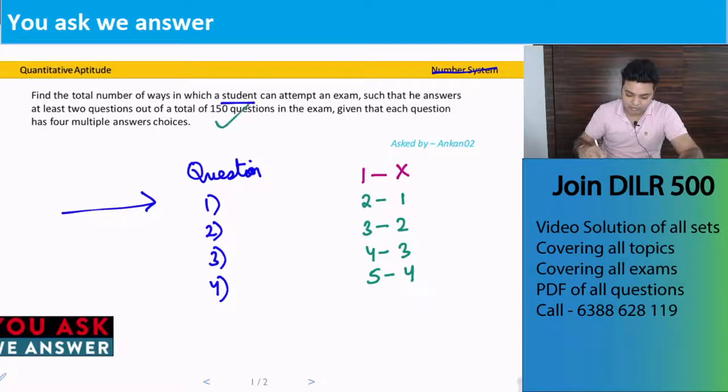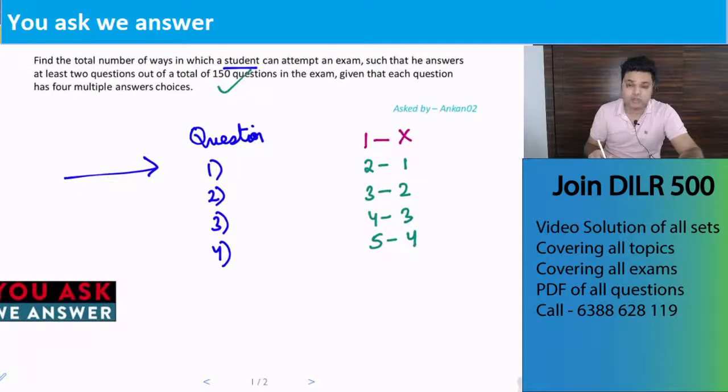Okay, so now there are 150 questions, so how many total options will there be? How many total ways to attempt these questions? For each question we have five ways, so total ways will be 5 raised to 150.